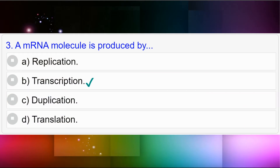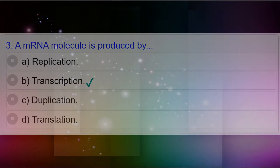Question number three: A messenger RNA molecule is produced by — option A: replication; option B: transcription; option C: duplication; option D: translation. Answer to question number three is option B: transcription.